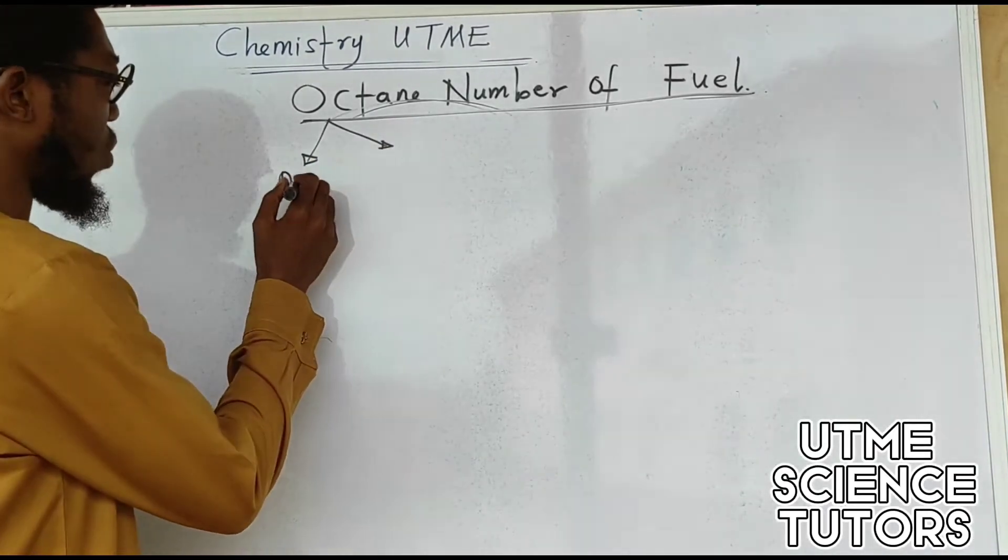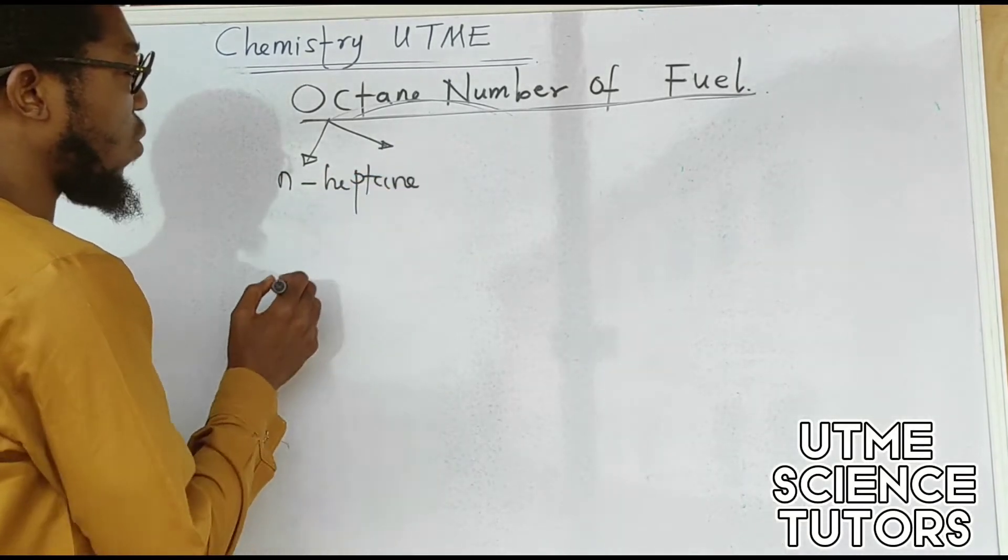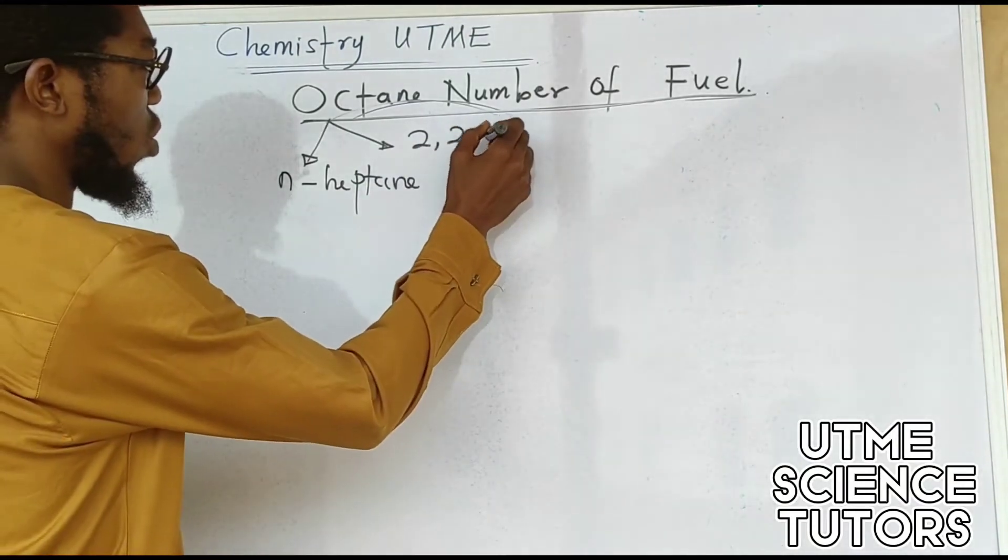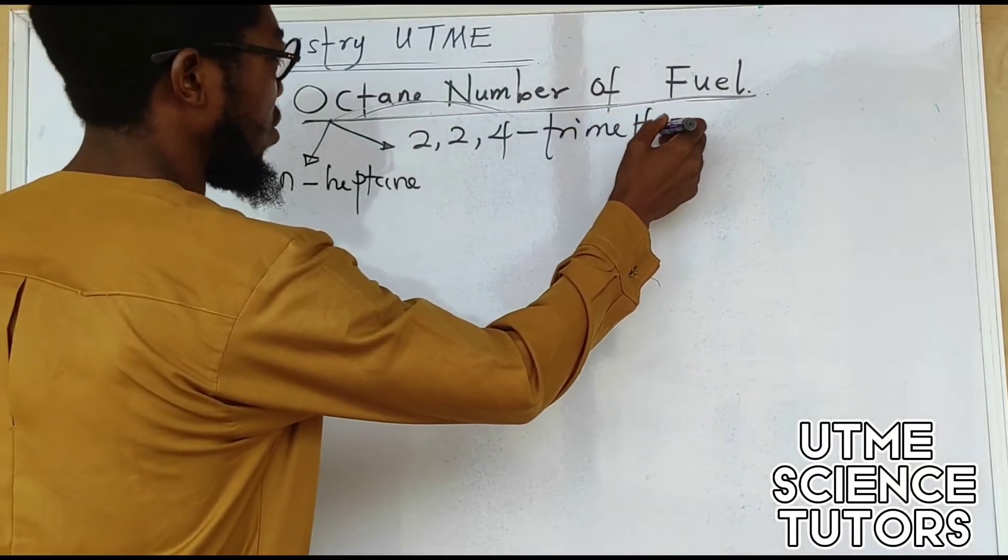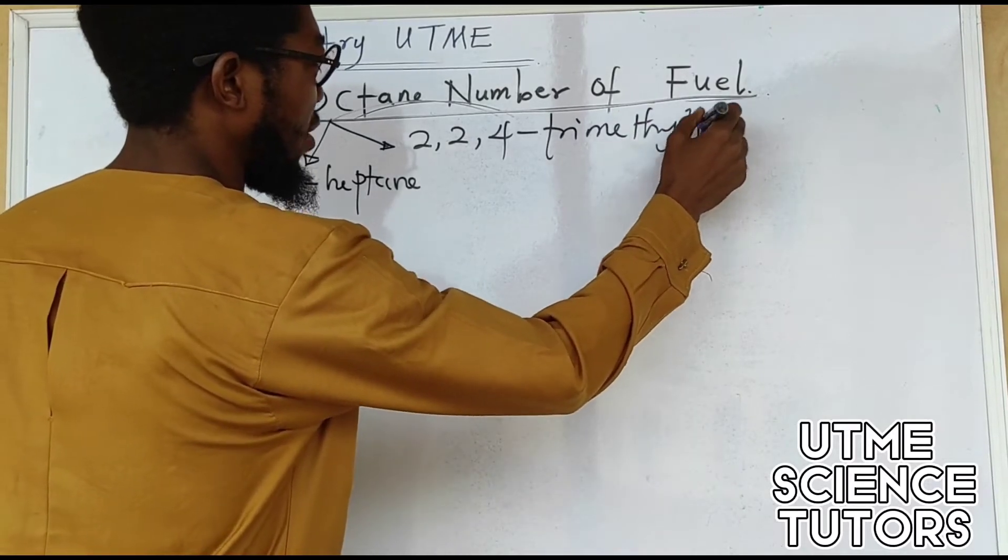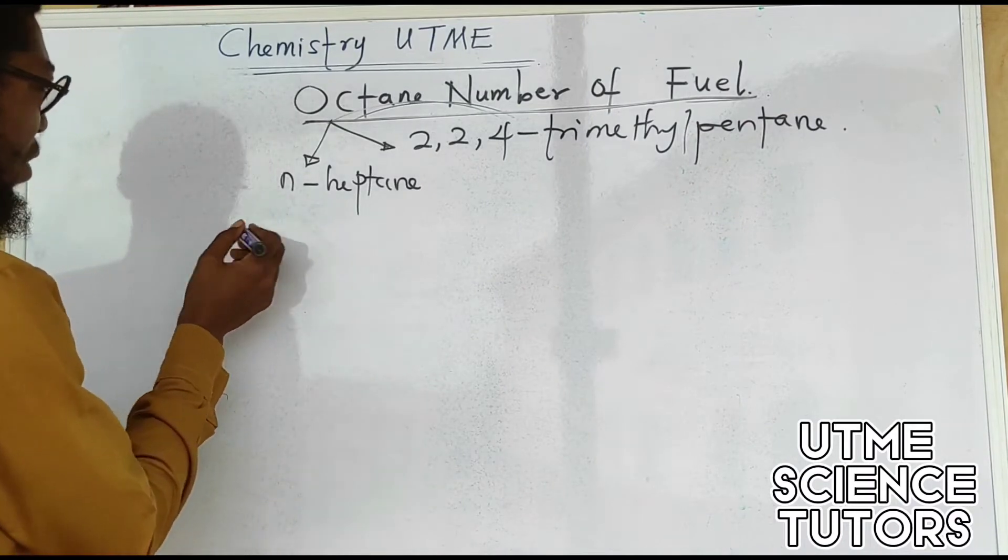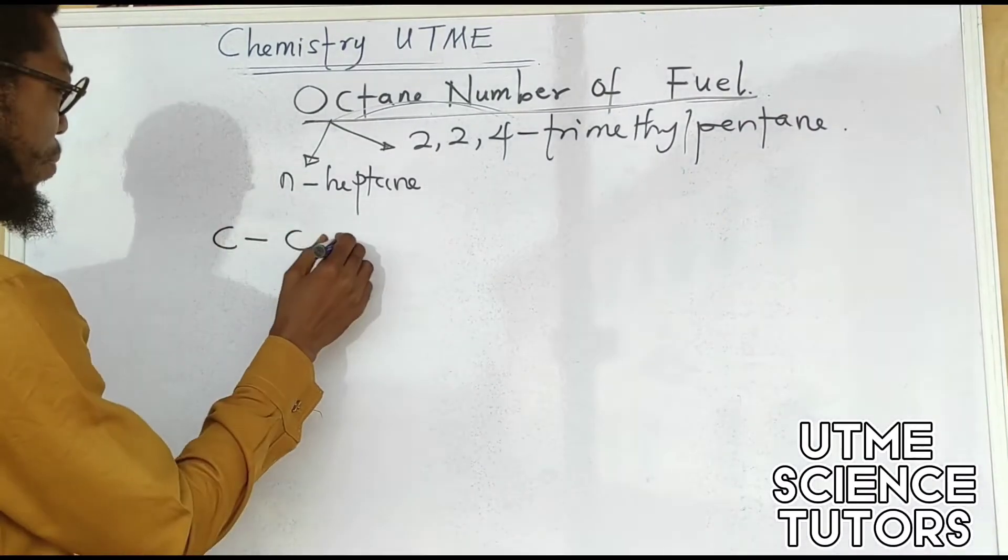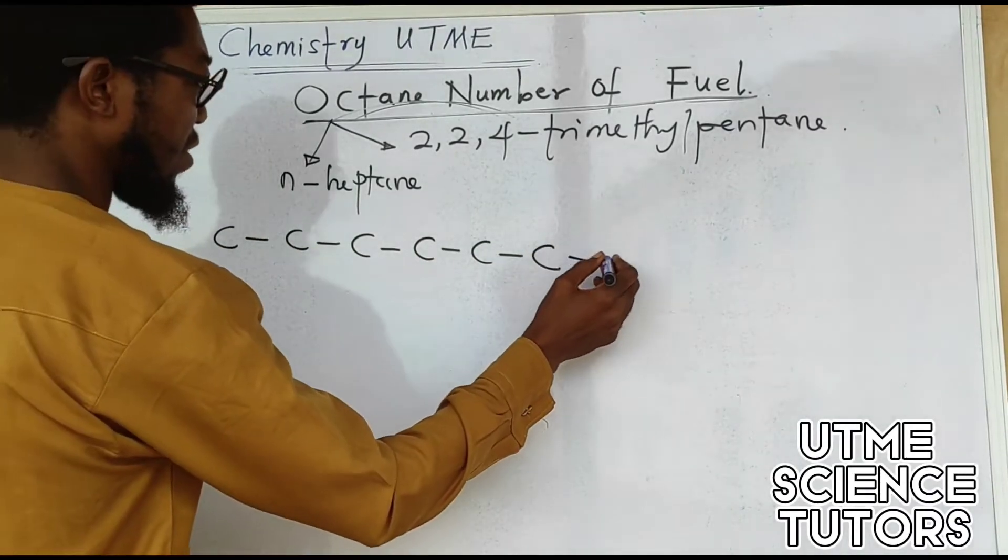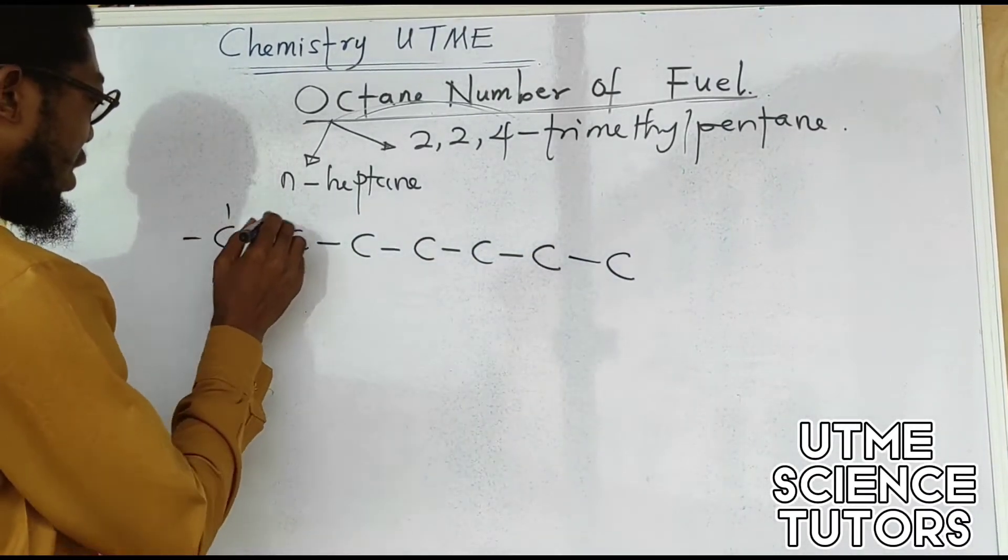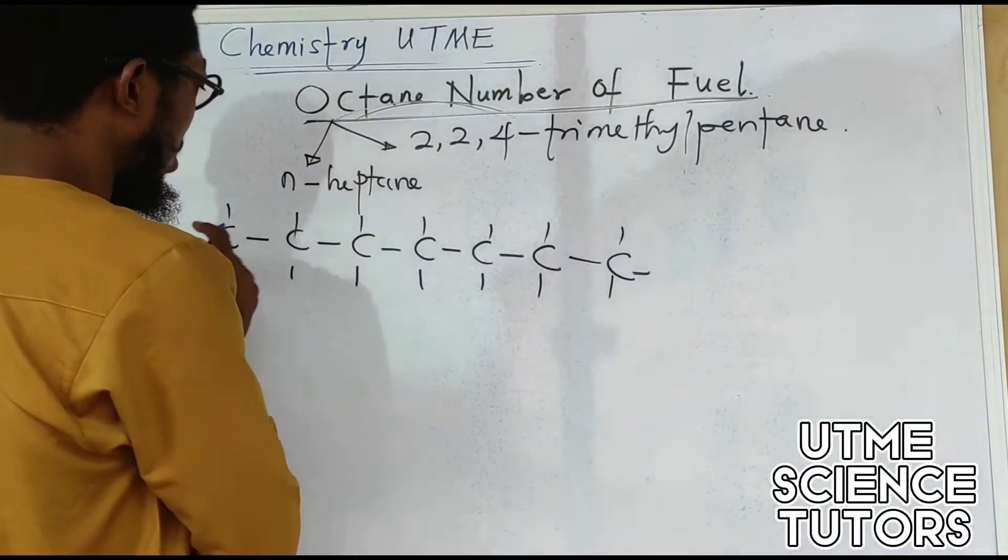There is one that we call n-heptane, and there is the other one that we call 2,2,4-trimethylpentane. The two molecules, their structure: the n-heptane is just normal heptane, meaning there are seven straight carbons to give that n-heptane. Here everything is just a hydrocarbon, the normal heptane, so that's why we call it n-heptane.